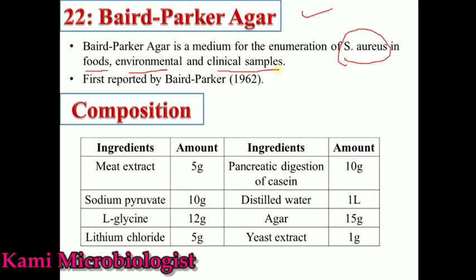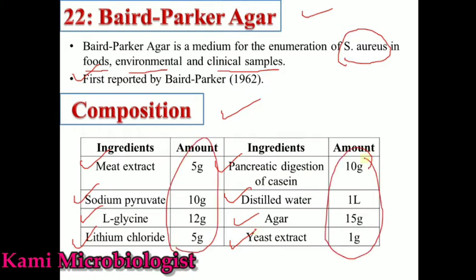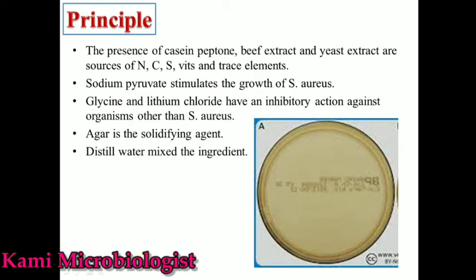This medium was first proposed by a scientist named Baird-Parker in 1962. Now let's talk about the composition of this medium. This medium contains meat extract, sodium pyruvate, L-glycine, lithium chloride, pancreatic digestive casein, distilled water, agar, and yeast extract. These are the ingredients in one liter.